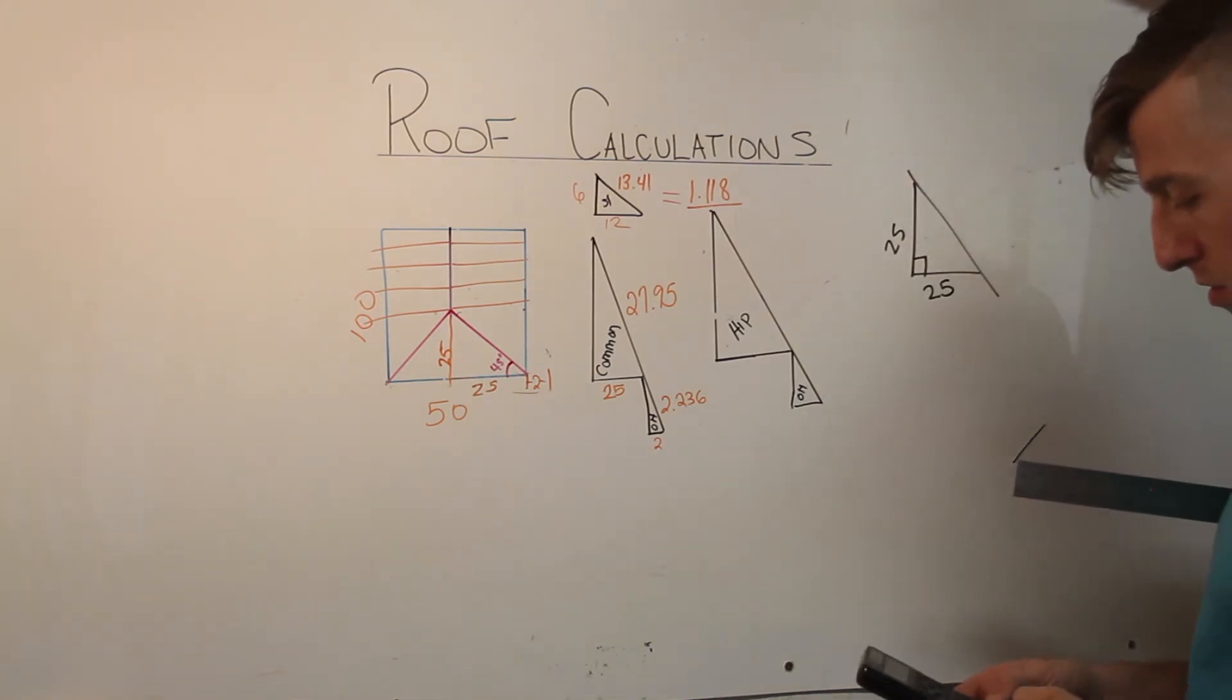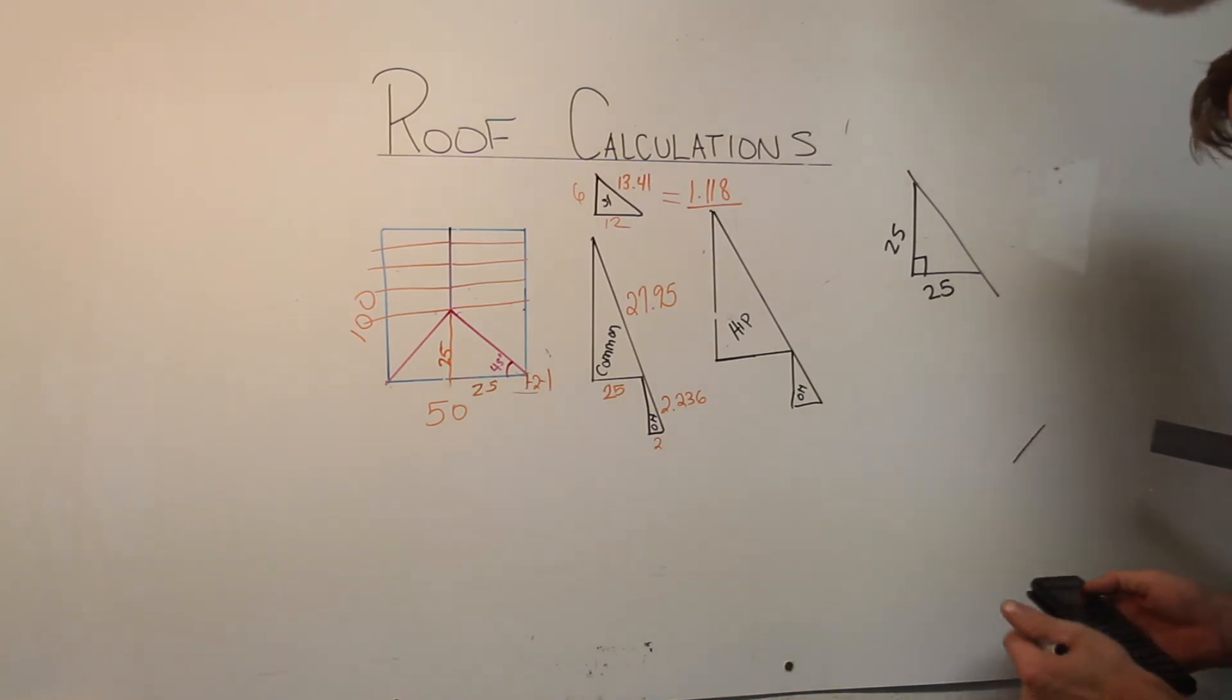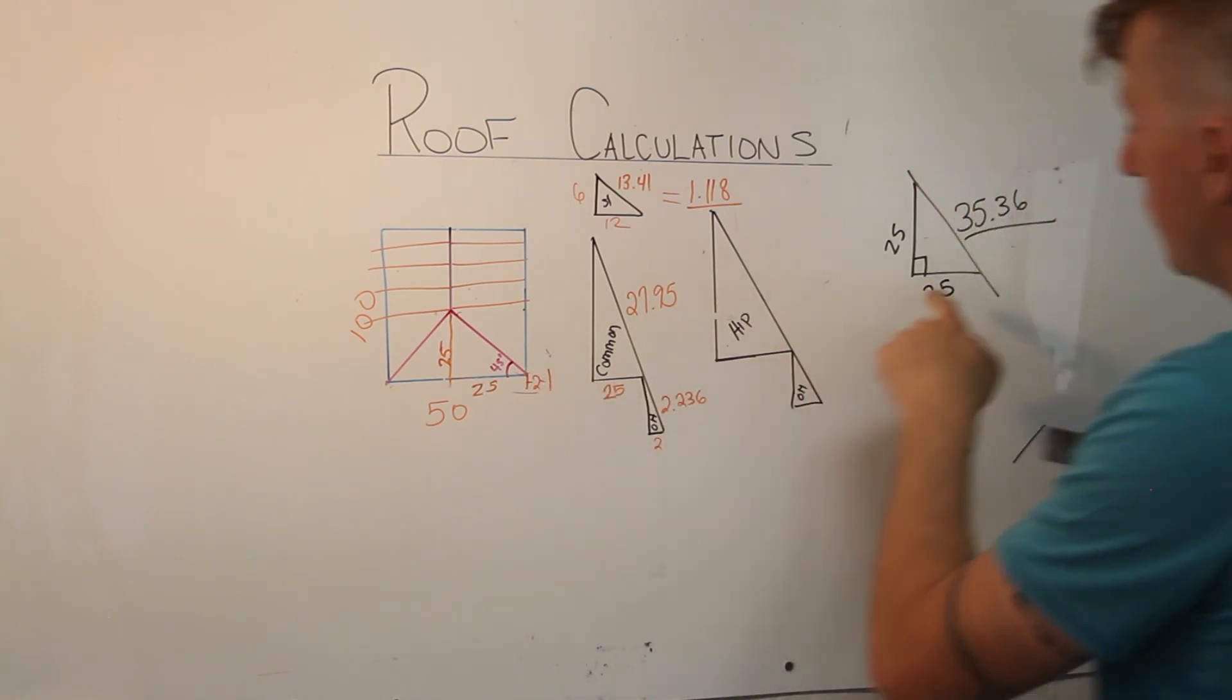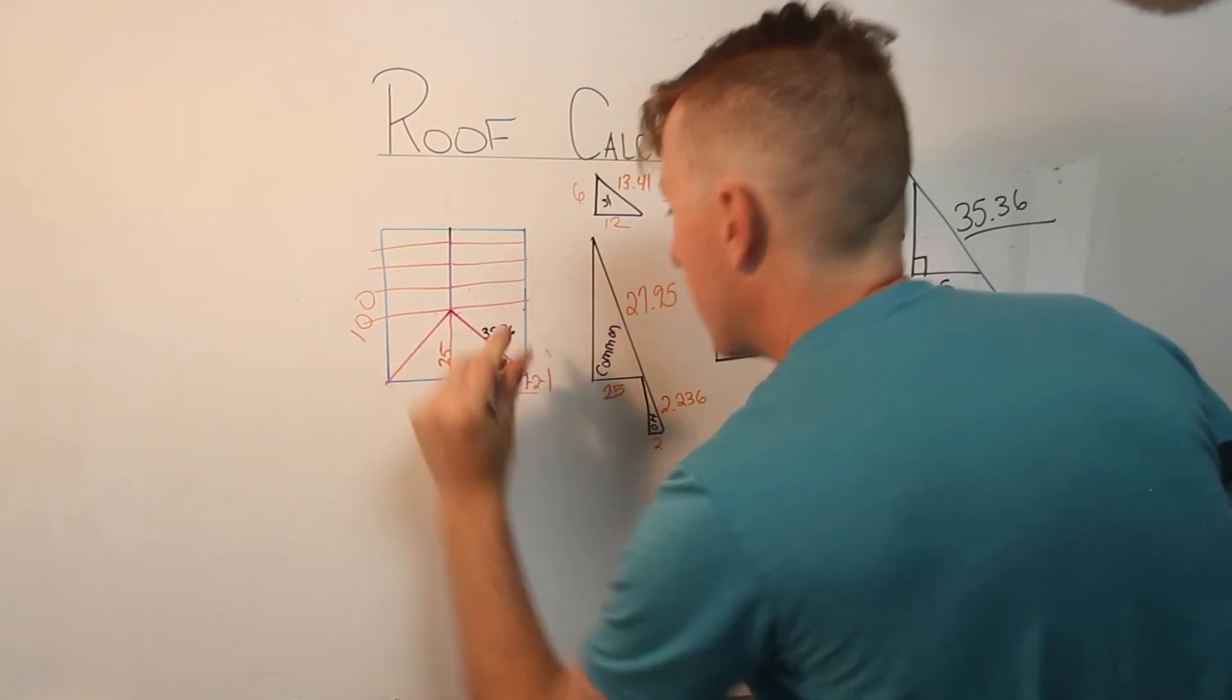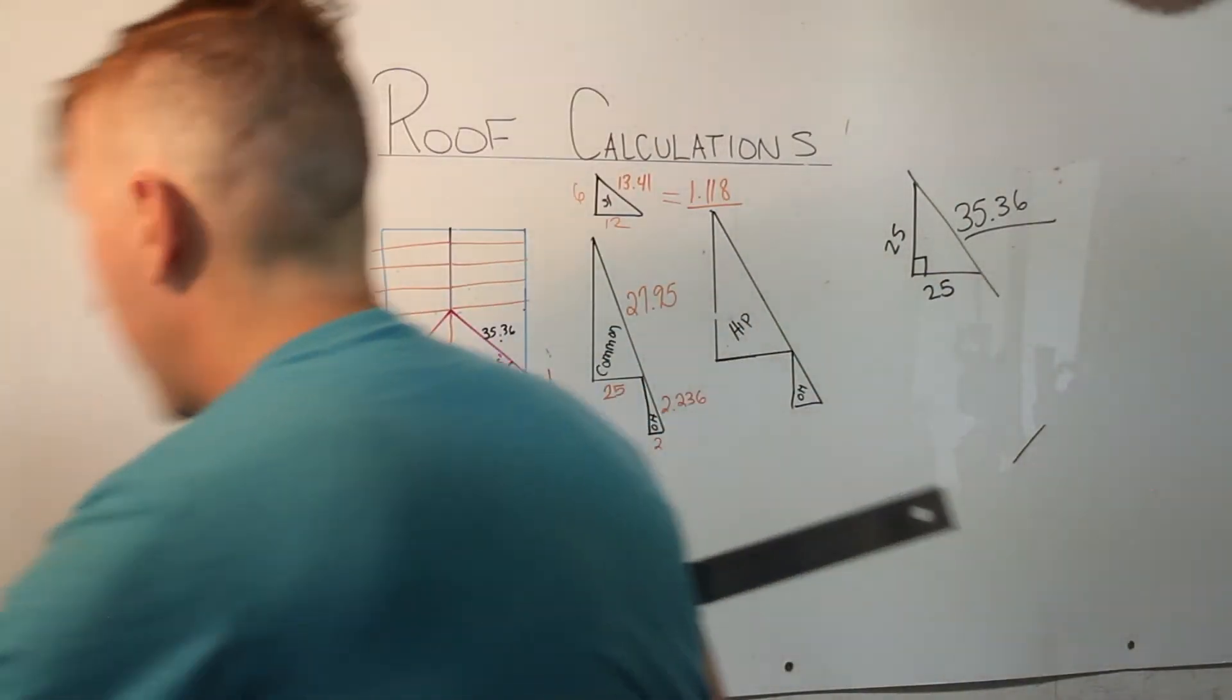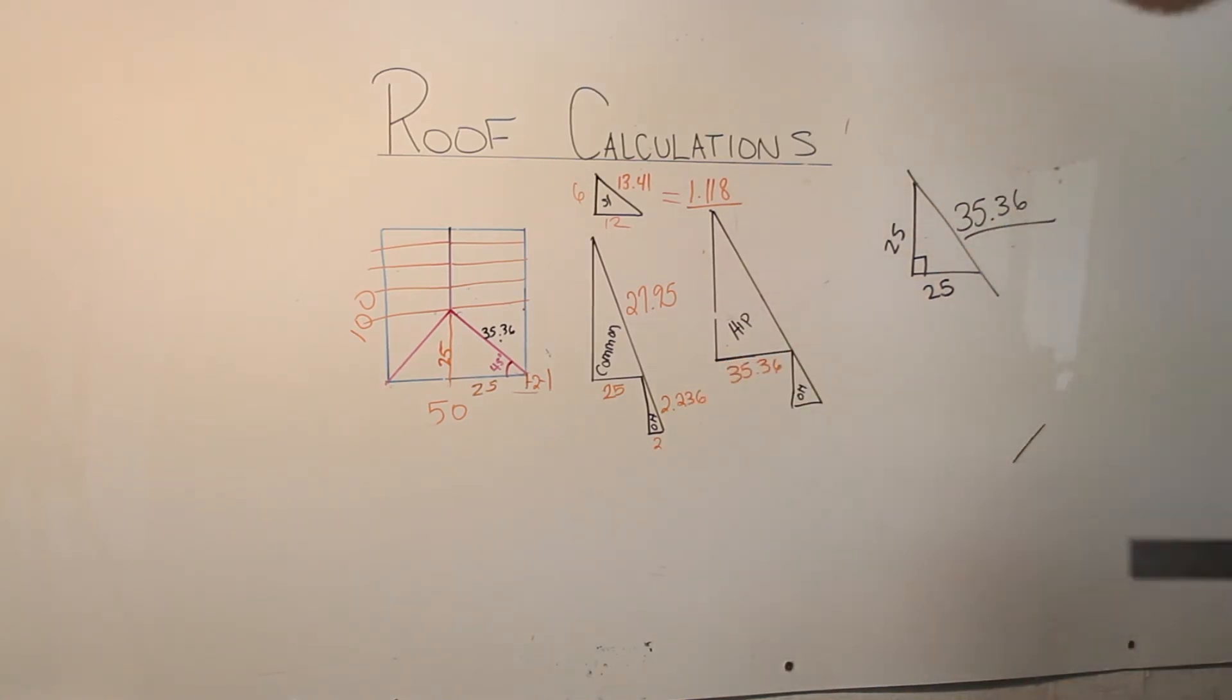What is this dimension going to be? So 25 squared plus 25 squared equals 35.355, 35.36. So this distance here, we've just solved as 35.36. So that you can bring over here, and that is now the run of the hip. 35.36.